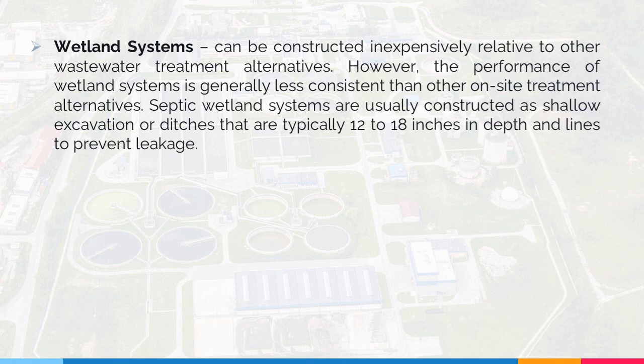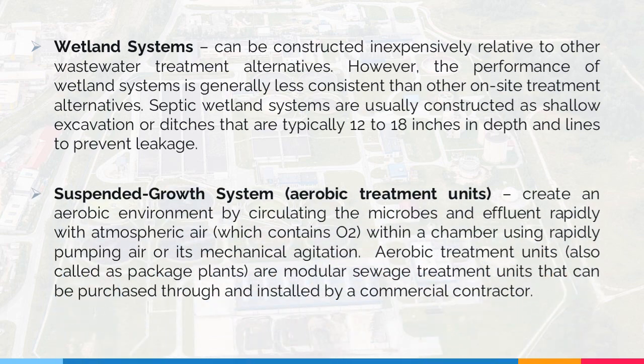Wetland systems can be constructed inexpensively relative to other wastewater treatment alternatives. However, the performance of wetland systems is generally less consistent than other on-site treatment alternatives. Septic wetland systems are usually constructed as shallow excavations or ditches, typically 12 to 18 inches in depth, and lined to prevent leakage. Suspended growth systems — aerobic treatment units — create an aerobic environment by circulating microbes and effluent rapidly with atmospheric air containing oxygen within a chamber, using rapidly pumping air or mechanical agitation. Aerobic treatment units, also called package plants, are modular sewage treatment units that can be purchased and installed by a commercial contractor.